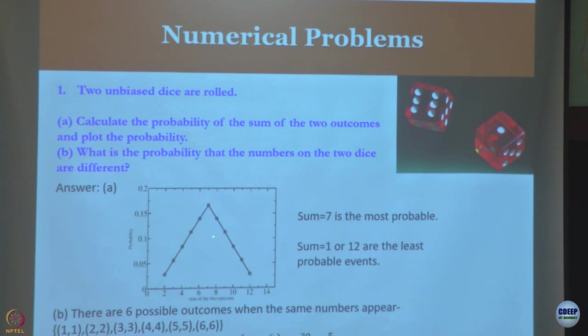The maximum is here because that can happen the most ways. Two is one plus one, twelve is six plus six. As you have, for example, eight - eight can be five plus three, three plus five, four plus four. So there are six possible outcomes and you can get the answer.